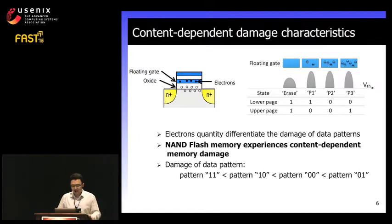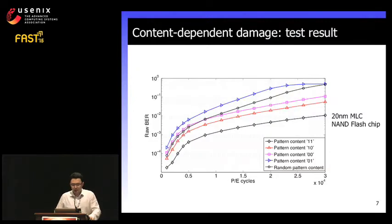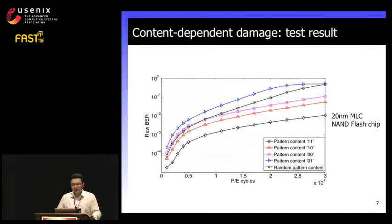We can expect that the damage introduced by pattern 1-1 is the smallest, while pattern 0-1 introduces the largest memory damage. Pattern 1-0 introduces smaller damage than pattern 0-0. To further demonstrate this content-dependency, we carried out experiments using 20nm MLC NAND flash memory chips, testing the raw bit error rates for all four data patterns as well as a random data pattern. Results clearly show that different data patterns require quite different program and erase cycle counts to reach the same raw bit error rate, supporting our conclusion about content-dependent damage.